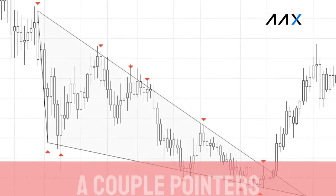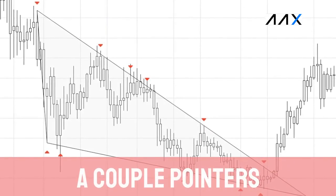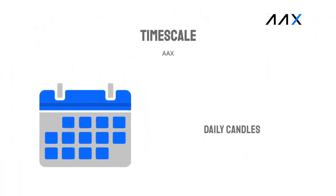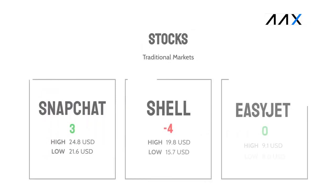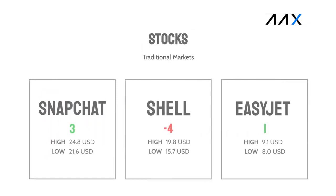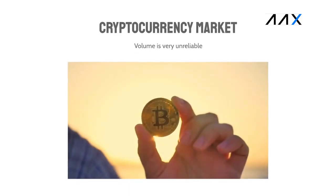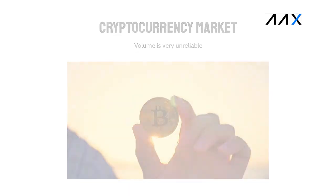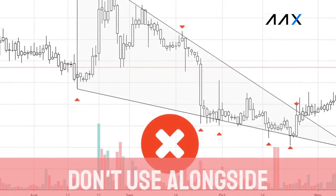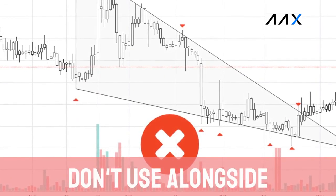A couple of pointers on wedge formations before we take a deeper look into them. Firstly, wedge formations are most effective on the daily candles, with a formation taking at least three weeks. Secondly, wedge formations are often used alongside volumes in the stock market, but in the cryptocurrency market, the volume indicator is misleading. Therefore, it should not be used alongside wedge formations.